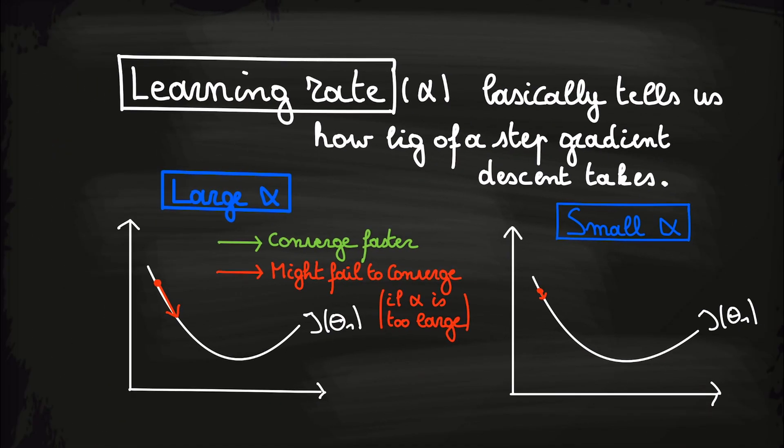Yes, for a sufficiently small learning rate, the value of j should always decrease on every iteration and we get a correct working algorithm.